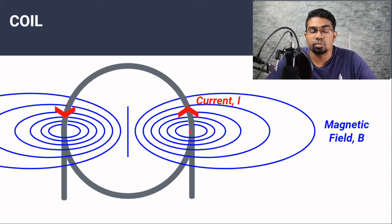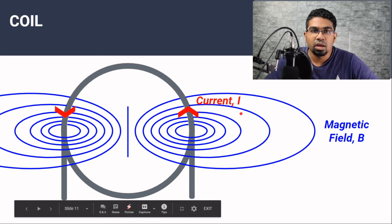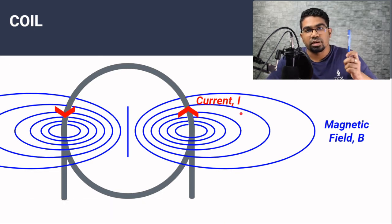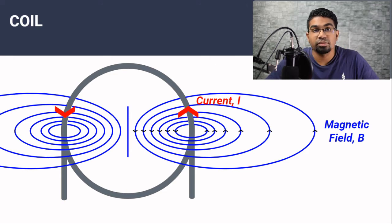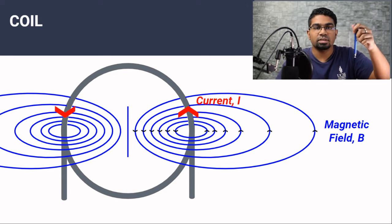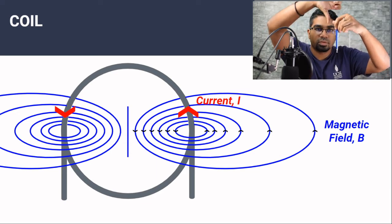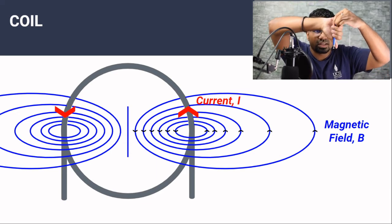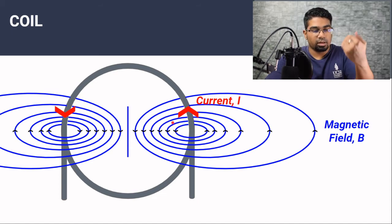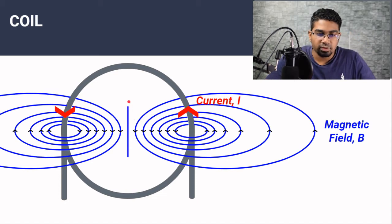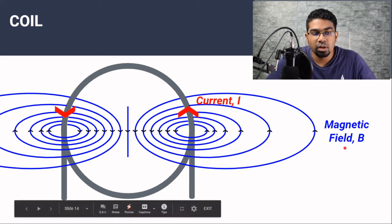We are only going to be looking at these two points. The direction of magnetic field, again we use the right-hand grip rule. We follow the direction of the current — the thumb follows the current. Thumb points upwards for the right side, so this is the direction of the magnetic field. For the left side, the thumb follows the current again; this time the current is going downwards. So the thumb follows the direction of the current, and this is the direction of the magnetic field. We can see in the center the direction of the magnetic field is the same — both are coming out of the plane. This will be the direction of magnetic field for a coil.